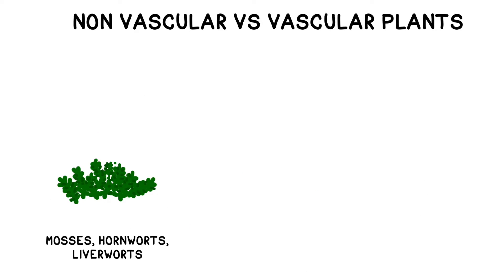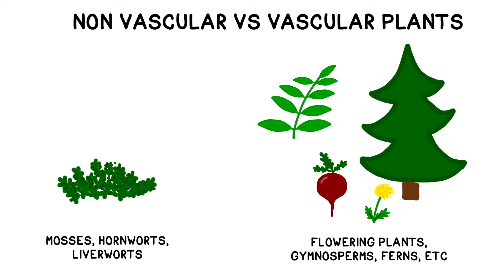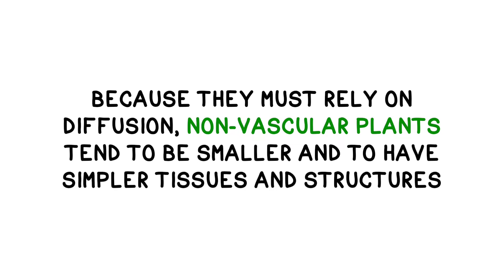Plants are generally split into two major categories: nonvascular plants and vascular plants. Nonvascular plants such as mosses, hornworts, and liverworts do not have a system of xylem and phloem tubes to transport materials around the plant. Because they must rely on diffusion, these plants tend to be smaller and to have simpler tissues and structures.